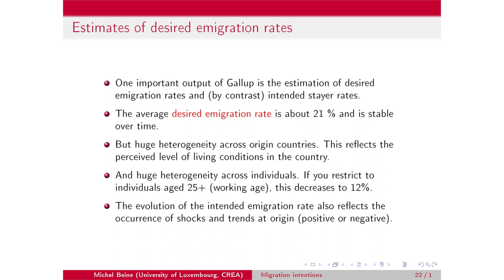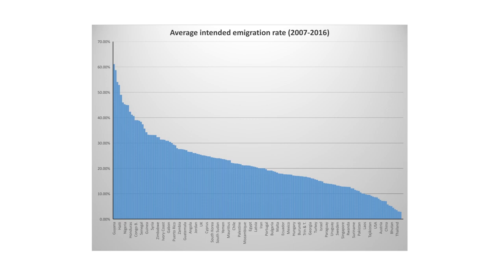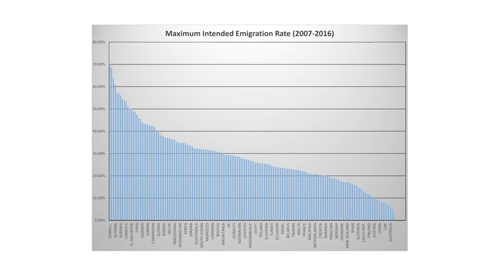Of course this is an average and there is also huge heterogeneity across origin countries. For some countries you have more than 60%, while for a couple of countries you have less than 2% or 3% of people who would like to leave. There is huge heterogeneity in these desired immigration rates. And if you take the maximum immigration rate across all waves, this heterogeneity is even higher.